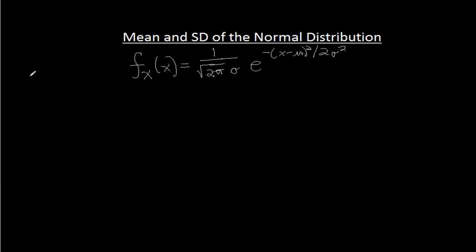...times sigma, times e to the negative X minus mu squared over 2 sigma squared. And you might think we really don't need to do this video, because the mean, that's mu, I know what it is, it's mu, it's whatever number shows up right there, and the standard deviation, that's whatever number shows up for sigma.